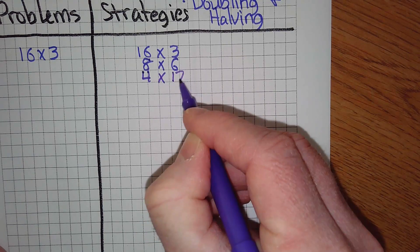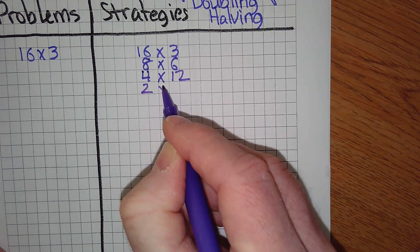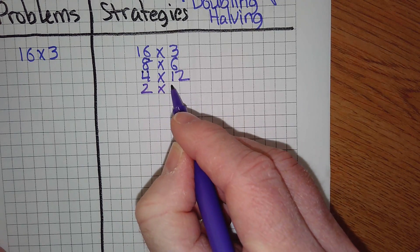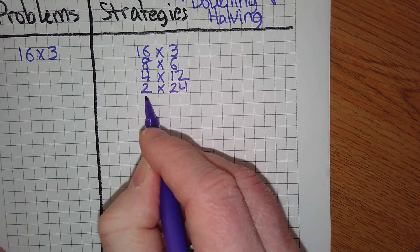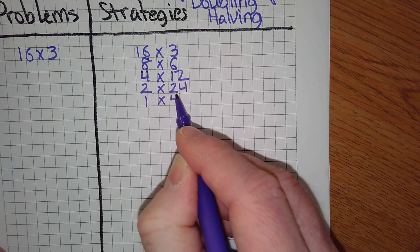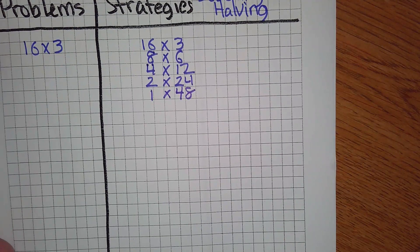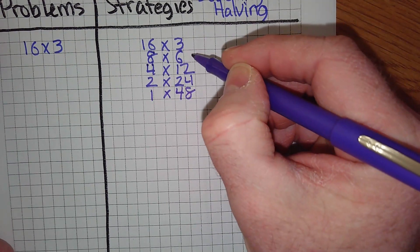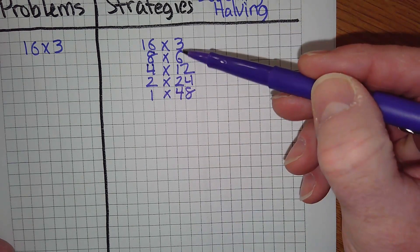Good, keep going. Very good, that's the doubling and halving strategy. You don't have to do it all the way. Zach knew right away 8 times 6 is 48. If you know your basic facts, you don't have to do that much work.